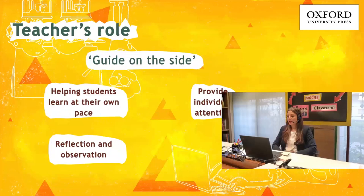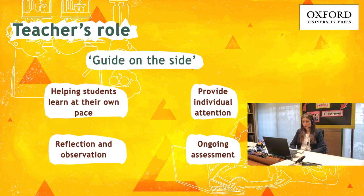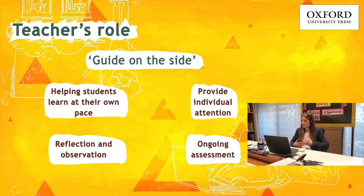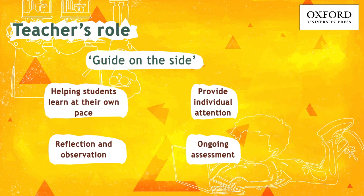If a student is struggling with something, they stop, rewind, and go through it again. But not everyone has to do that at the same time — a child who picks up learning faster will move on to more challenging tasks. This allows for differentiated learning. It also allows for ongoing assessment because when the teacher engages individually with children, they get a very good idea of each child's learning journey, and can start rewarding effort rather than just the output in a formal summative assessment.